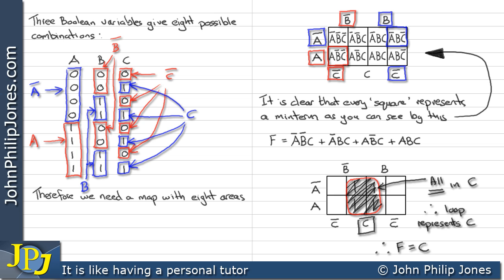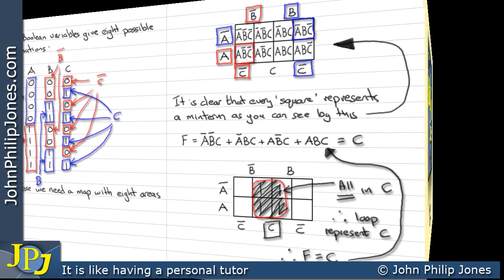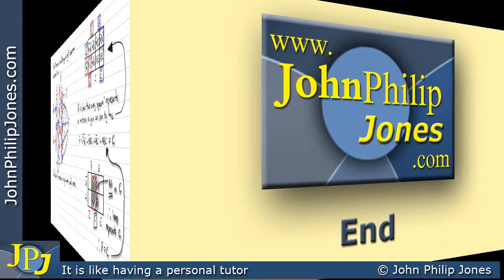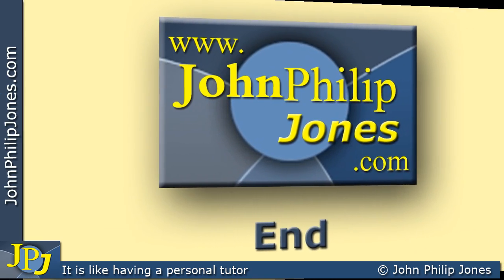So F becomes C — this expression that we have plotted minimizes to just C. The next video in the playlist will look at other examples of three-variable Karnaugh maps.